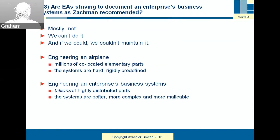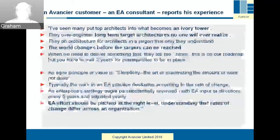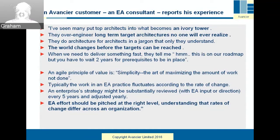Are enterprise architects striving to document business systems as Zachman recommended? Mostly they aren't nowadays — we've discovered we can't do it, and even if we could, we couldn't maintain it. Zachman's analogy with the airplane doesn't really work. An airplane has millions of co-located elementary parts with hard, rigidly defined systems. Engineering business applications is several orders of magnitude more complex: there are billions of highly distributed parts, and the systems are very soft, complex, and much more malleable. One of Vancier's customers — an EA consultant themselves — noted that architects become an ivory tower, with long-term targets no one will realize, and the world changes before those targets can be reached.